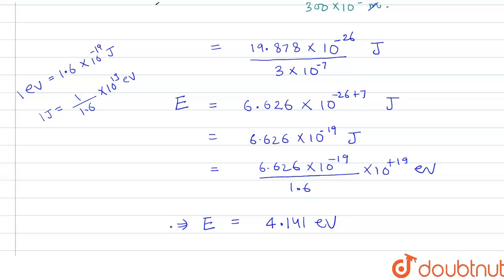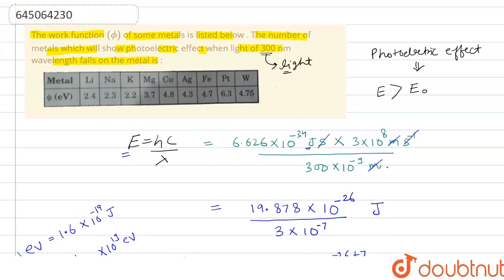We have to find out which metal will have the work function lesser than the energy provided by this light. We can easily say that lithium has 2.4 eV, which means 2.4 is less than 4.141, so it will show photoelectric effect.